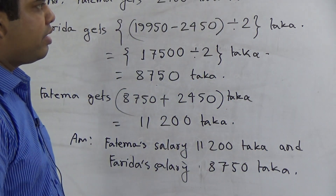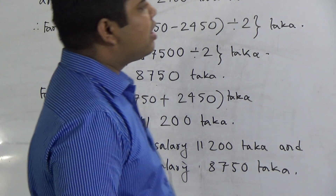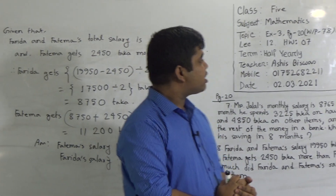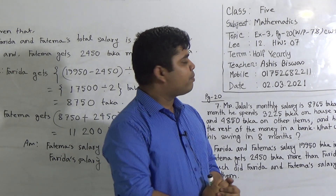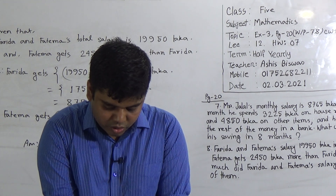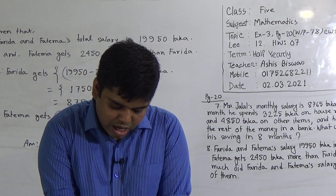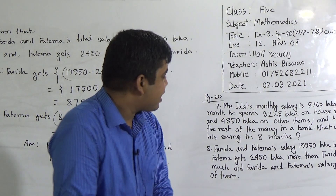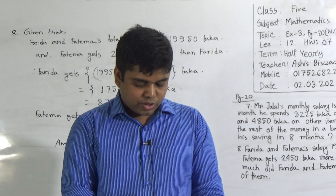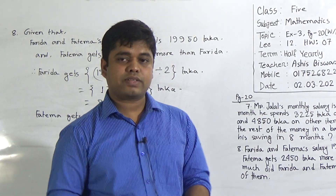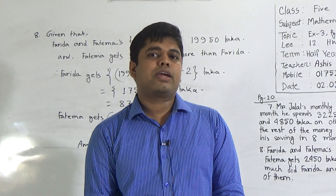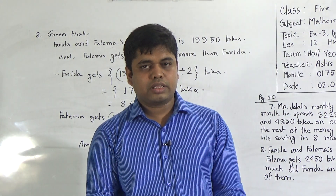I hope you have understood. This is our today's CW — question number 7 and 8. Question number 9 of page number 20 will be your SW. Let me read it: Raju and Roni together have 690 marbles. Roni has 86 marbles less than Raju. How many marbles do Raju and Roni have? This is similar to question number 8 — I hope you can easily solve it. Keep practicing at home. Submit your SW at our school library every Saturday between 9 a.m. and 3 p.m. See you soon. Assalamualaikum.